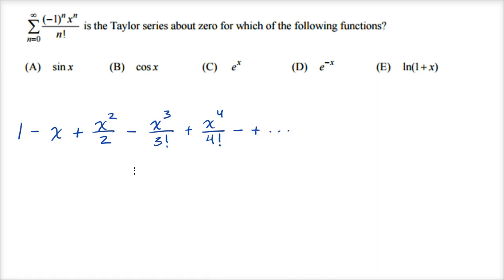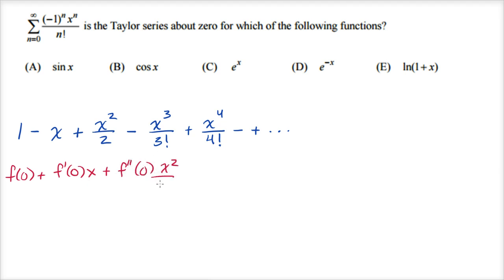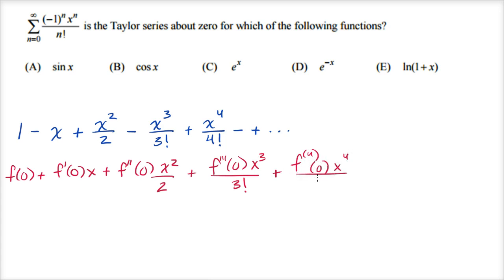Now our general form for a Taylor series about zero — which we could also call a Maclaurin series — is: f(0) plus f'(0)·x plus f''(0)·x²/2 plus the third derivative at zero times x³/3! plus the fourth derivative at zero times x⁴/4!, and so on.